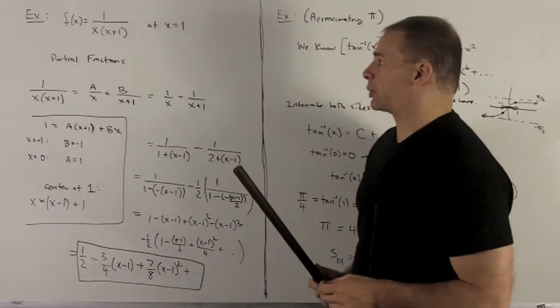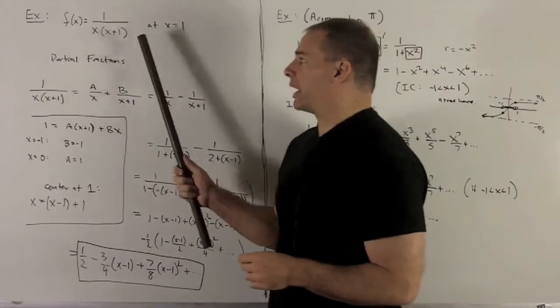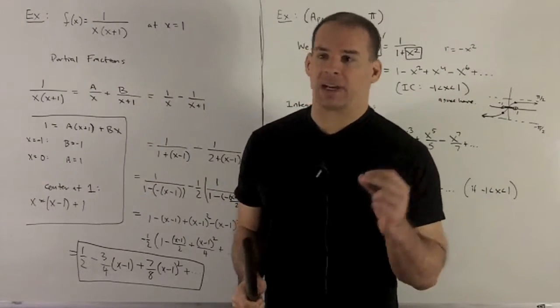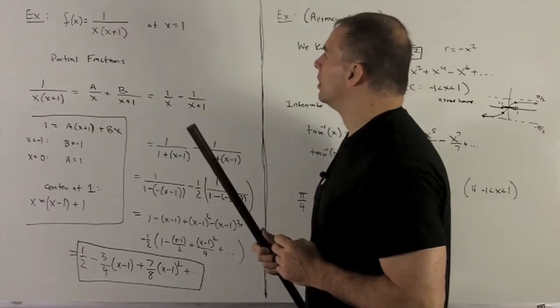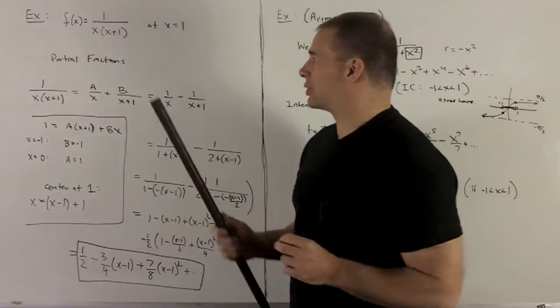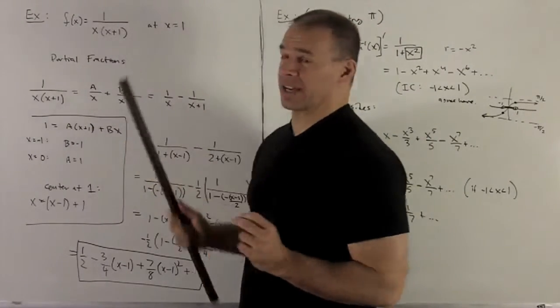I'm going to center it at x equal to 1. So somehow we've got to figure out how to get x minus 1 into the picture. The way we'll do that is we don't want to deal with this x squared plus x in the bottom.